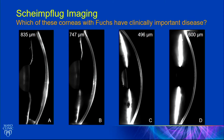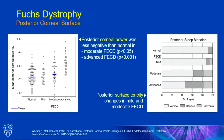This is a better question: all of these corneas have Fuchs dystrophy. Which ones have clinically important disease? These two over here have thick corneas, and you can see corneal edema in the slit beam. But this cornea that's thinner than average, and this cornea that's thicker than average — neither of them look like they have corneal edema, but both of them do. You have to do tomographic analyses to understand that. And that's what I'm going to show you.